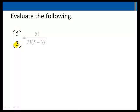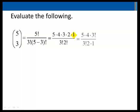Evaluate the following. 5 choose 3 equals 5 factorial over 3 factorial times 5 minus 3 factorial. 5 minus 3 factorial is 2 factorial. 5 factorial is 5 times 4 times 3 times 2 times 1, which we can also write as 5 times 4 times 3 factorial. We can then simplify to get 20 over 2, or 10.